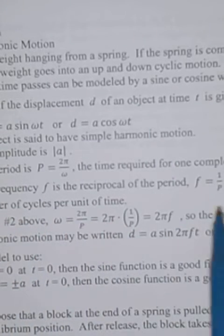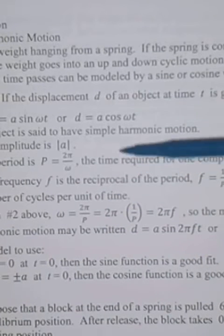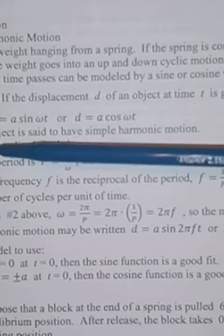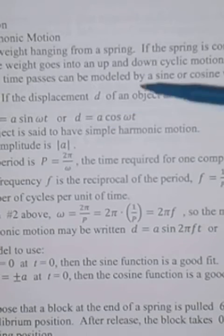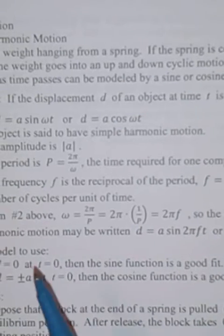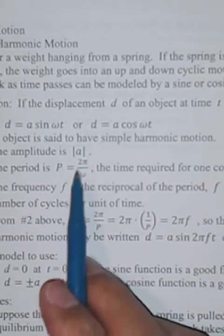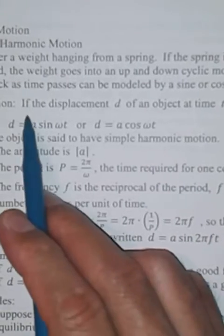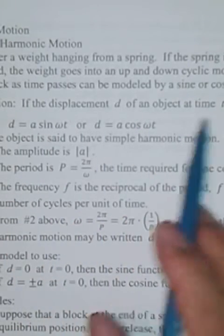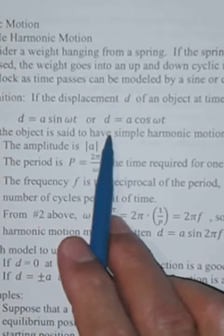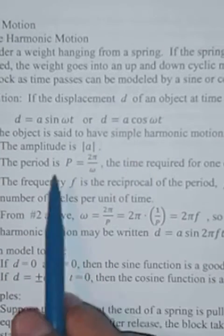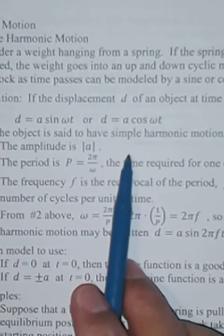Notice it's following the motion of a sine or cosine wave with respect to time at t. So the definition says if the displacement of an object at time t is given by d equals a sine omega t or d equals a cosine omega t, then the object is said to have simple harmonic motion.